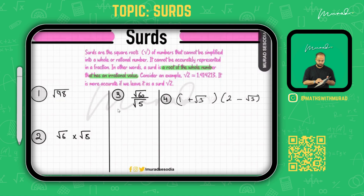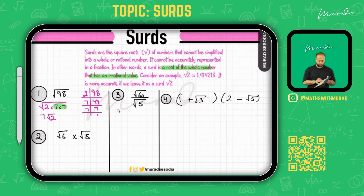You are going to take out the prime factors of 98. The prime factorization of 98 is 2 × 7 × 7. Under a square root, if two numbers form a pair, you can bring them outside. So the pair of sevens comes out as a single seven, giving us seven square root of two. Therefore, the square root of 98 equals 7√2.